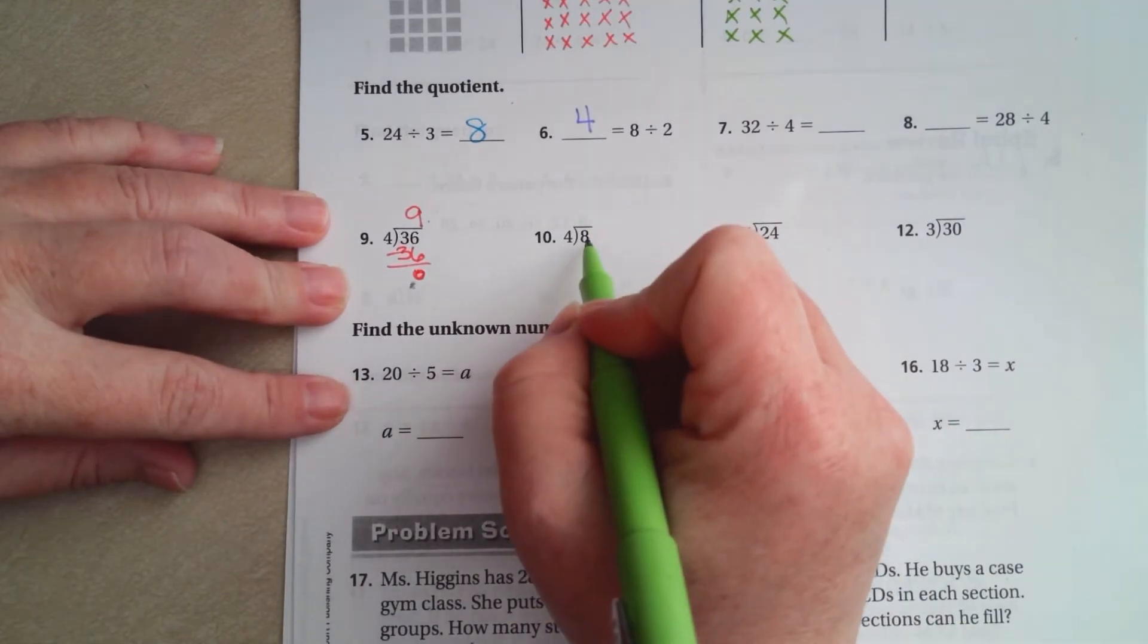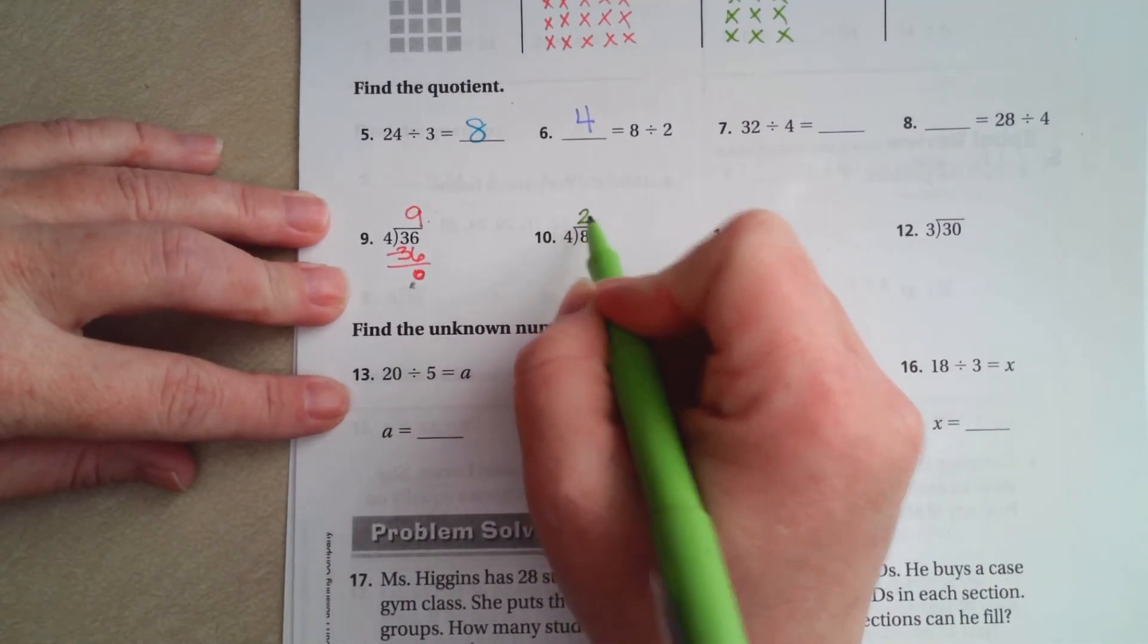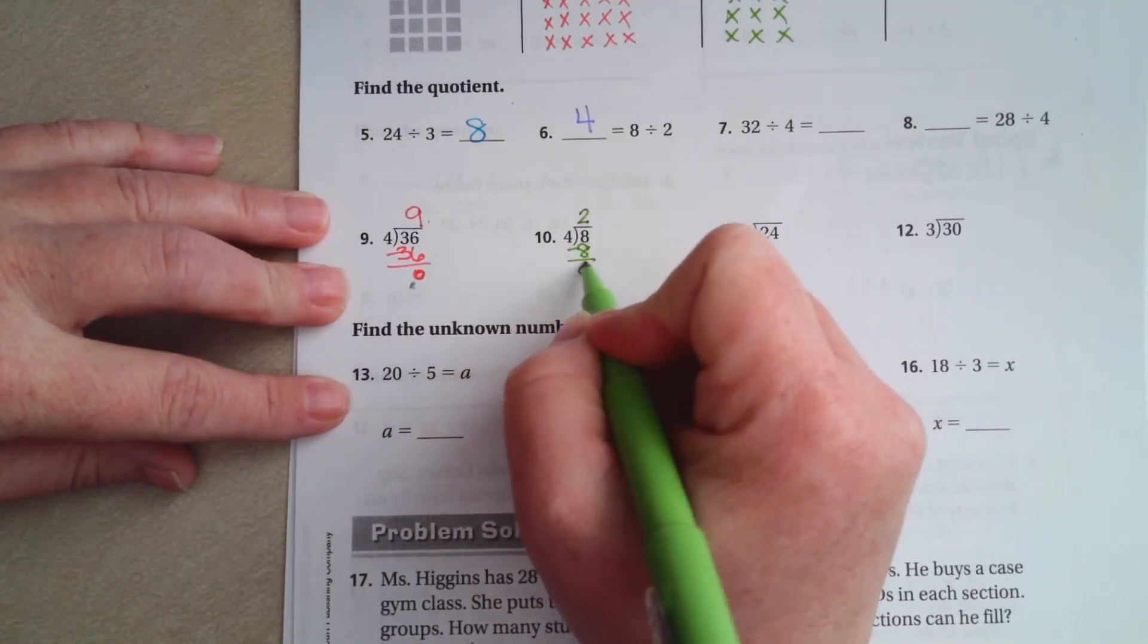How many times is 4 going into 8? Well, 4 times 2 is 8.